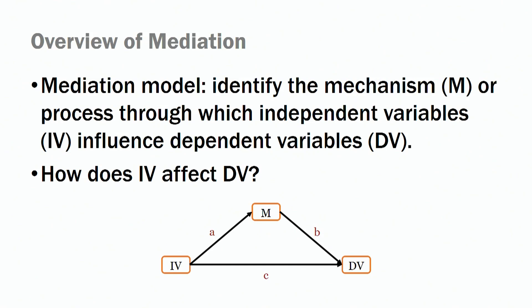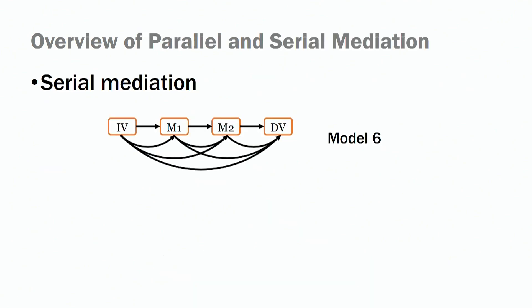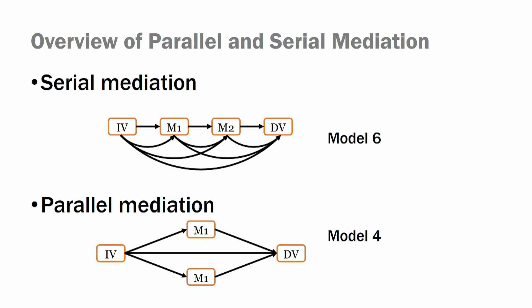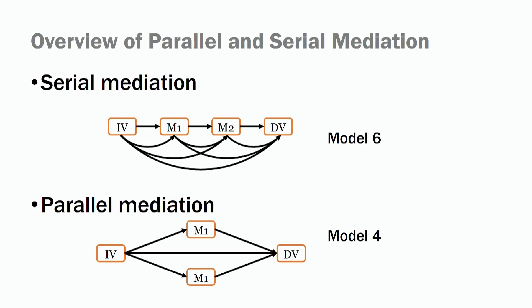We look for answers of how the independent variable affects our dependent variable. And then we have serial mediation models, and we also have parallel mediation models. With moderation, we are looking at variables that change the strength or the direction of the causal relationship between the independent variable and the dependent variable.